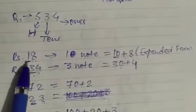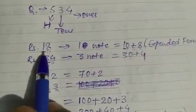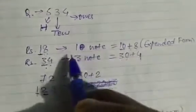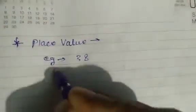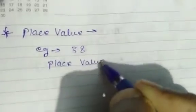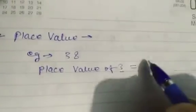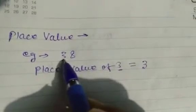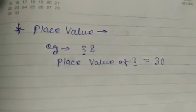Now I want to write the place value of a specific digit. Taking the number 38 — if I want the place value of 3, I write 3, then look at how many digits come after 3 in the number. There is only 1 digit after it, so I add one zero: the place value of 3 is 30.